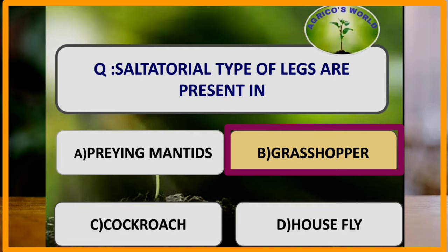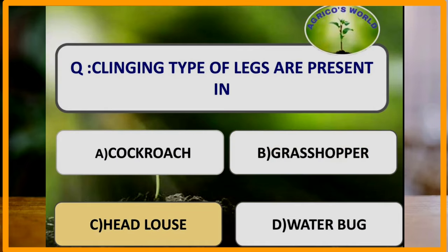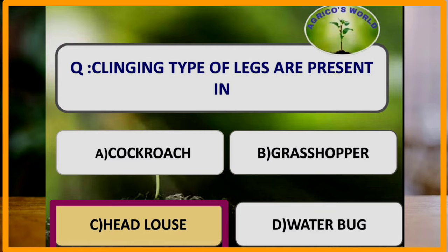Saltatorial type of legs are present in which of the following? Saltatorial legs are seen in grasshoppers. The hind legs of grasshoppers are modified for leaping and jumping. In saltatorial legs, the femur and tibia are elongated. Clinging legs are present in which of the following? Clinging legs are present in the head louse. These legs are called scansorial legs. In scansorial legs, the tibia possesses a tibial thumb, the tarsus is single-segmented, and the pretarsus has a single long curved claw used for clinging.